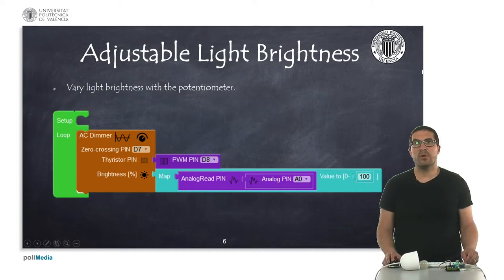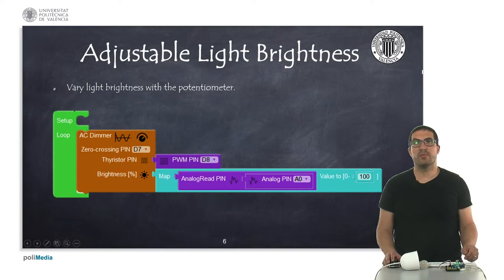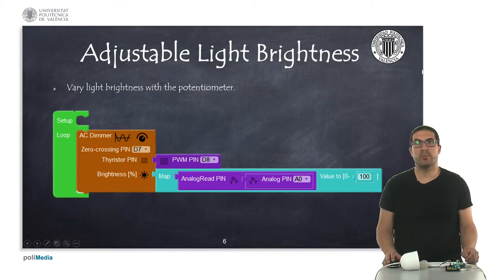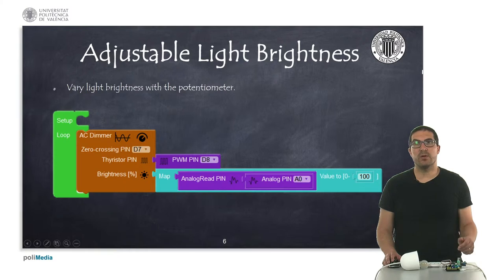In this second example, what we have is an adjustable light brightness, so we can regulate the light with the potentiometer. Let's see how it works with the overhead camera, please.